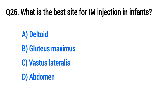Question 26: What is the best site for IM injection in infants? The right option is C, vastus lateralis.